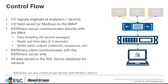I wanted to take a second to go into the control flow of the signals and how those work with the RataVue system. The signals start at the analyzers — emissions data comes from the analyzers down to the 8864. Those are typically hardwired to the 8864 with 4-20mA and some digitals, but we can also do Modbus from the analyzers to the 8864 if you don't want it hardwired.